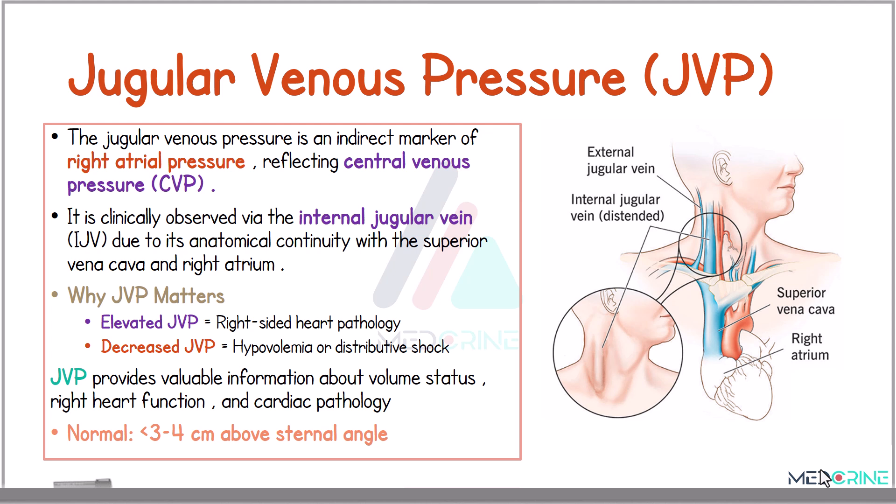Jugular venous pressure is an indirect marker of the right atrial pressure. It reflects the central venous pressure and is best assessed using the internal jugular vein, due to its direct anatomical continuity with the superior vena cava and the right atrium. An elevated jugular venous pressure suggests right-sided heart pathology, while a decreased jugular venous pressure may point to hypovolemia or hypovolemic shock.